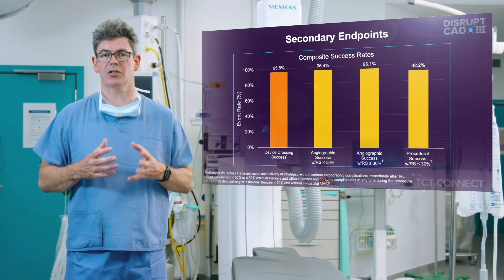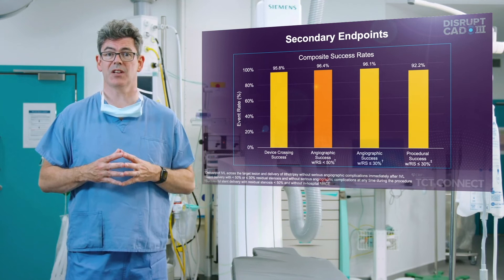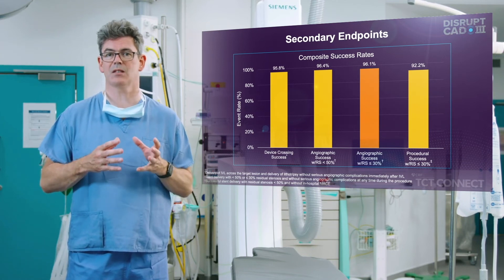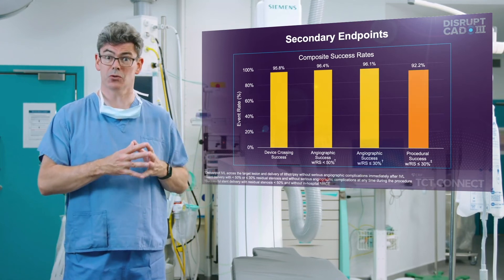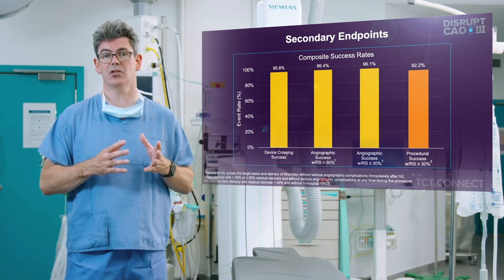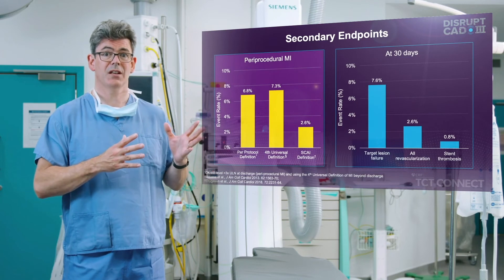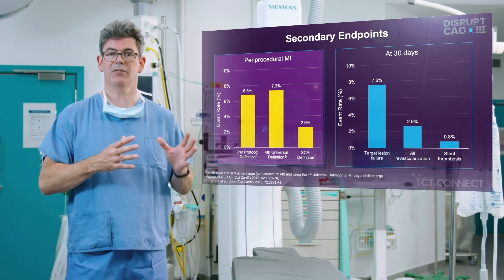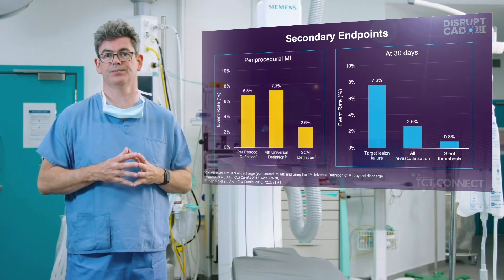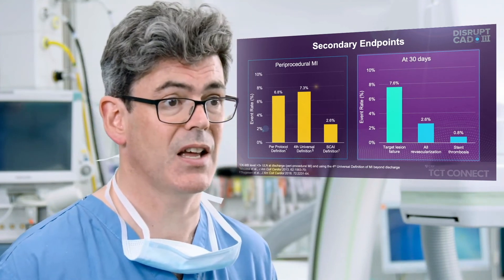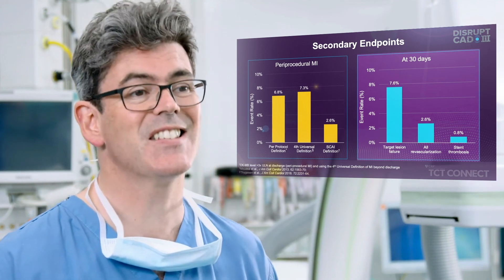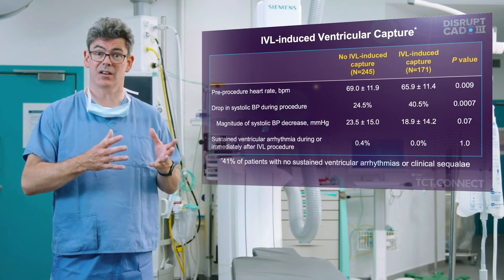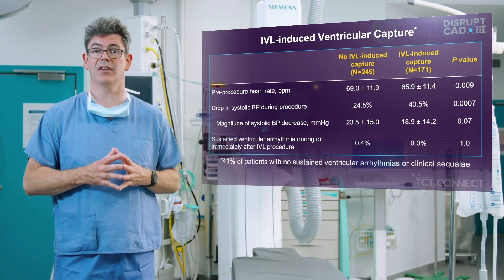Key secondary endpoints included device crossing success and angiographic success with less than 50% or less than or equal to 30% residual stenosis — all 96% or greater. Procedural success with residual stenosis ≤30% was 92.2%. Periprocedural MI was assessed using three definitions per protocol: fourth universal and SCAI. None of these definitions altered the primary conclusions. Target lesion failure was 7.6%, all revascularization 2.6%, and stent thrombosis 0.8%.